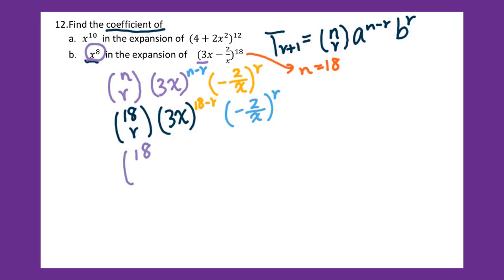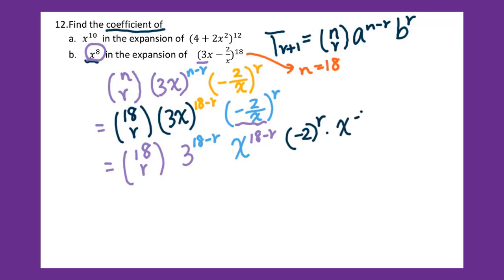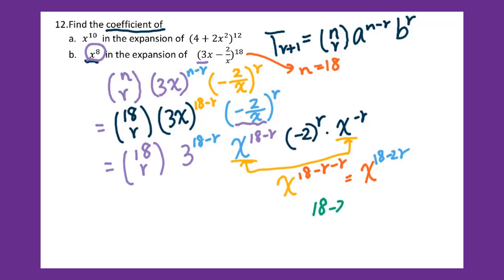We continue: 18 taken r, times 3 to the 18 minus r power, times negative 2 to the r power, times x to the negative r power. Putting all x together by adding exponents, we get x to the 18 minus r minus r power, which is x to the 18 minus 2r. We set up 18 minus 2r equals 8, and figure out r equals 5.